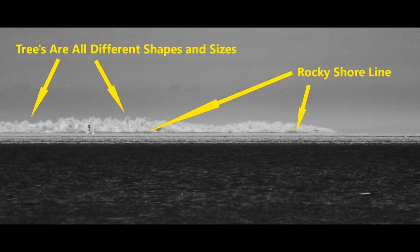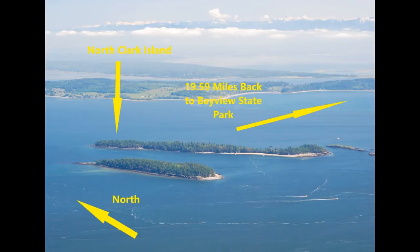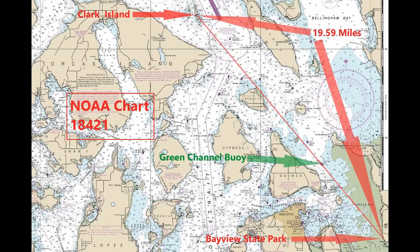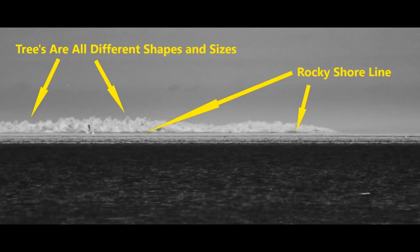Yet you can make out all the different types and shapes of trees and even what appears to be a rocky dark coastline of the island. Looking at Clark Island from Orcas Island looking west, you can notice the lower portion of the island and how it compares to the infrared picture, and also the dark edge coastline. To me this is clear evidence that there is no curve. The infrared image clearly shows the shape of the island, individual tree shapes and sizes, and even a rocky coastline at a distance of 19.59 miles. Globe math tells us 141 feet of the island should be hidden from view, but it's not from what I can determine.